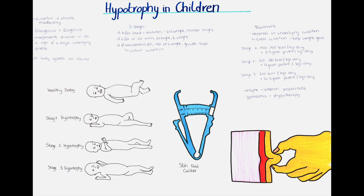Hypotrophy can occur as an independent disorder or as a sign of a major disease causing hypotrophy. Generally, all systems of the body are affected. There is usually a mental dysfunction due to deficiency in vitamins B1 and B12, as well as a deficiency in magnesium and phosphate, which together lead to irritability and depression.